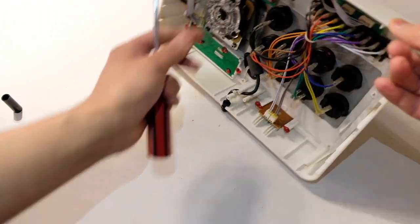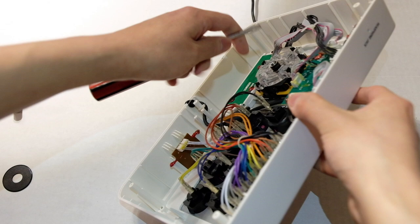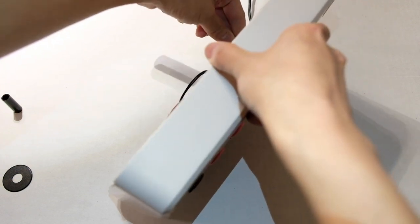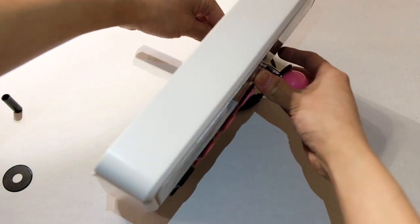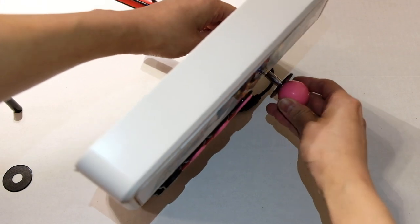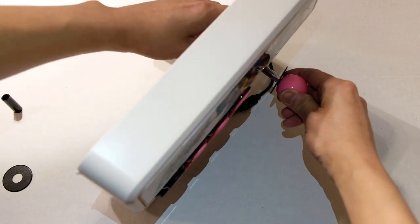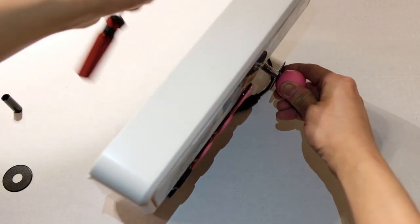Now you want to just put the ball top back on, hand tighten. And now you want to use your flat head screwdriver and hold the bottom and tighten it.